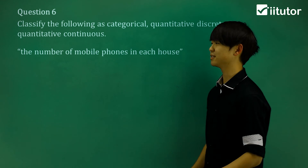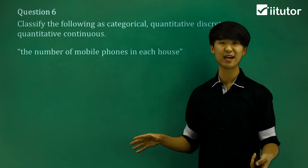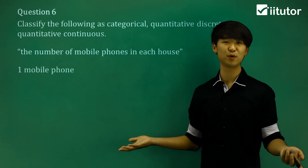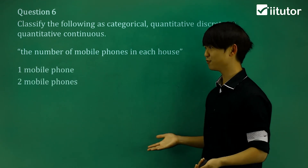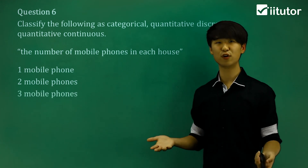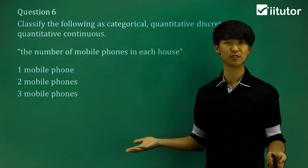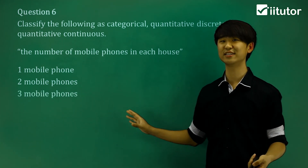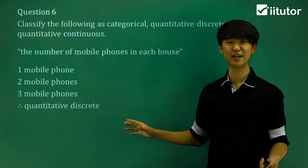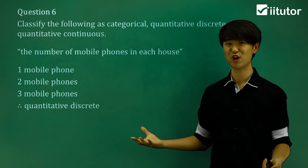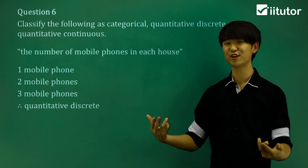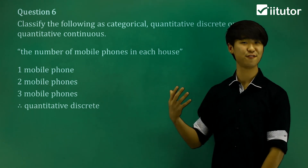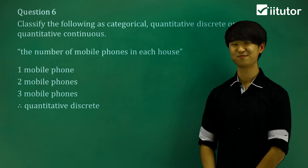If we take a look at any house, we can say there's going to be one mobile phone, two phones, or three phones. In that case, this is a quantitative discrete variable. So we've been looking at quantitative variables this time.